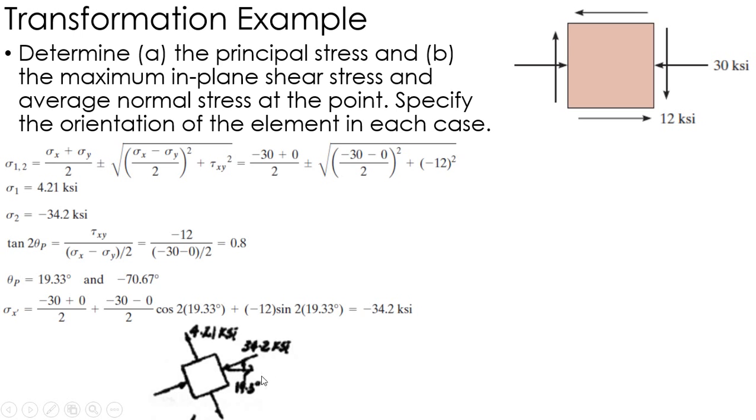And the 4.21 is in the other direction, which would actually be negative 70.6 down from the horizontal there. So there is my element drawn in its principal orientation.